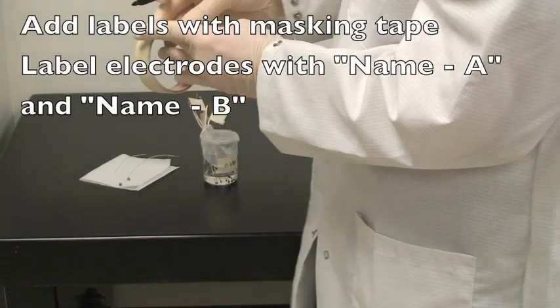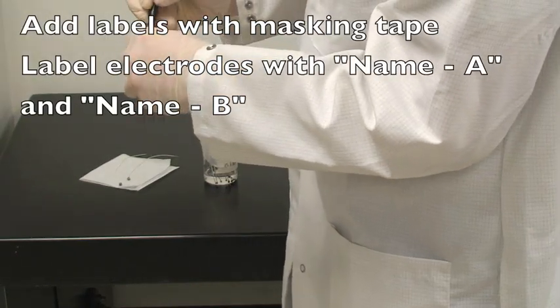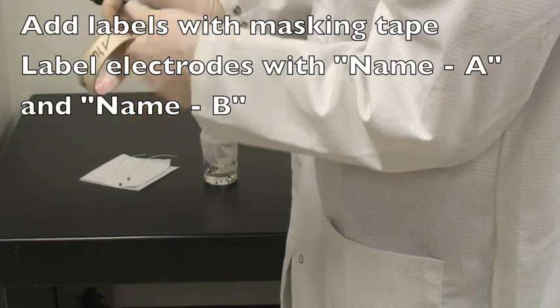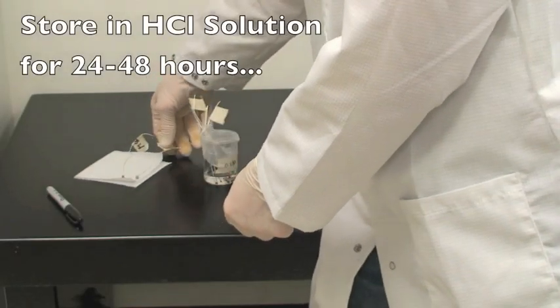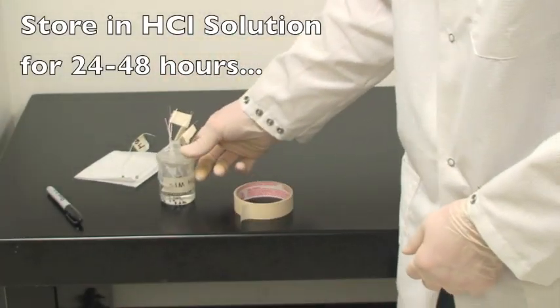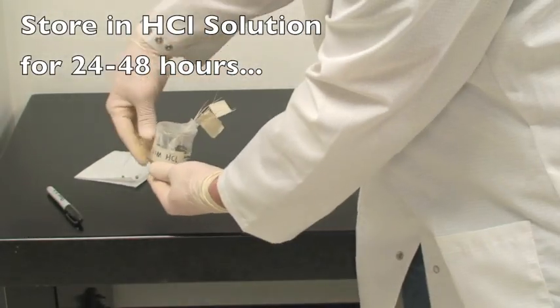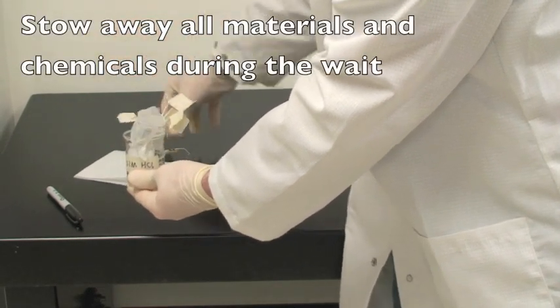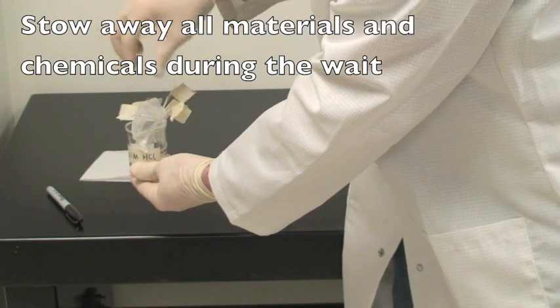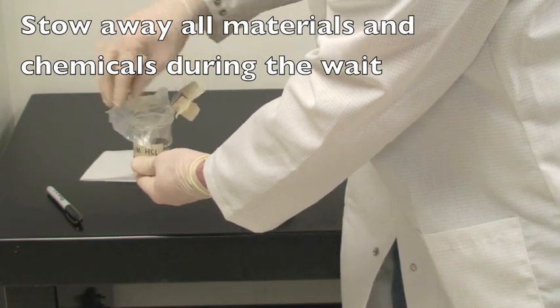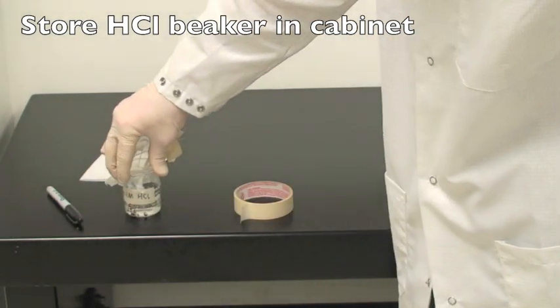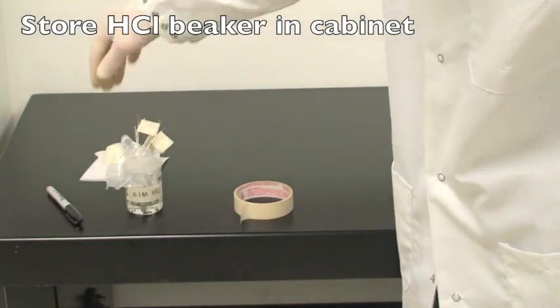We'll now label each electrode using masking tape, and be sure to distinguish between the electrodes by labeling them A and B and of course including your name. Next we'll store the electrodes in the hydrochloric acid solution that's provided in the cabinet with the other electrodes. We'll allow the electrode to sit for 24 to 48 hours. So please take the time to clean up the lab and put away all chemicals, and store the beaker with the electrodes back in the cabinet so that it's not exposed to sunlight.